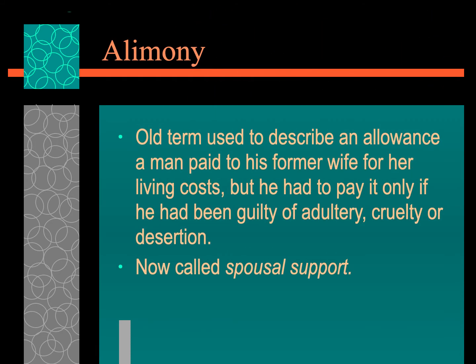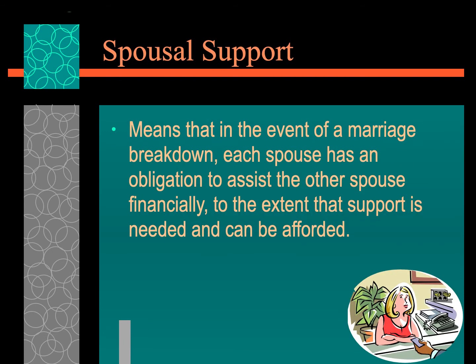Alimony is an old term that used to describe an allowance a man paid to his former wife for her living costs, but only if he had been guilty of adultery, cruelty, or desertion. Alimony is no longer a politically correct term used in Canada; the current term is spousal support. Spousal support means that in the event of a marriage breakdown, each spouse has the obligation to assist the other financially to the extent that support is needed and can be afforded.